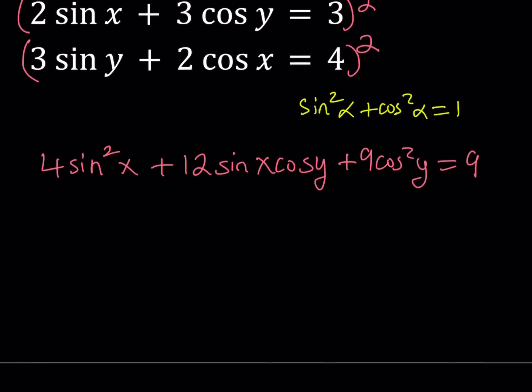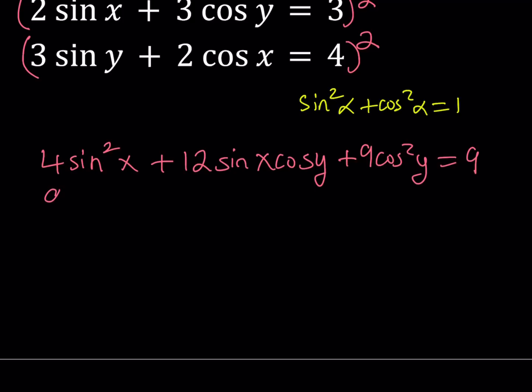And if you square the second one, that should give you 9 sine squared y plus 12 sine y cosine x, plus 4 cosine squared x, and that should equal 4 squared, which is 16.